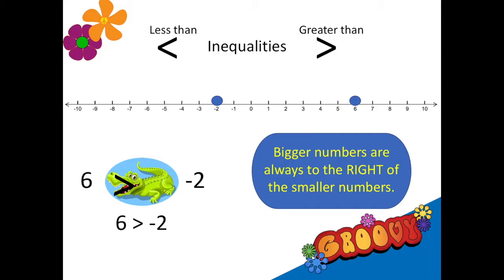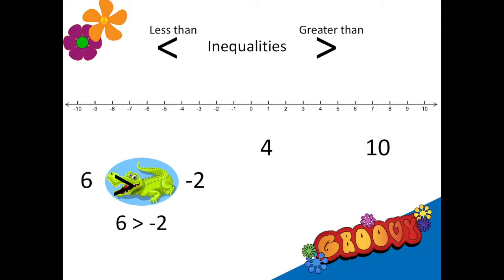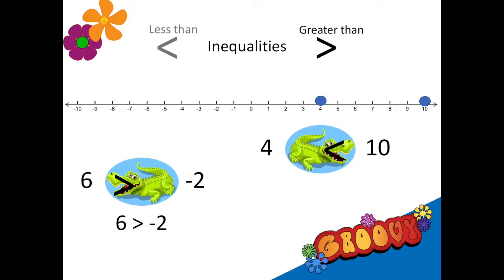Let's try this again with four and ten. I'll plot them — ten is bigger because it's to the right of four, so the alligator wants to eat the ten. I trace the alligator's mouth — that's the less than sign. And now I write a new math sentence: four is less than ten.